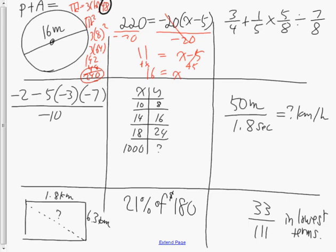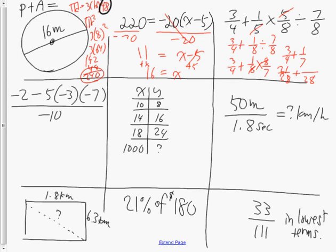In the next question I have a few fractions. I do multiplication first, keeping three-quarters and cross-reducing to get one-eighth. Then I change the division to multiplication by the reciprocal; those cross-reduce as well. So I end up with three-quarters plus one-seventh, with 28 as the common denominator, giving 21 over 28 plus 4 over 28, for a final answer of 25 twenty-eighths.